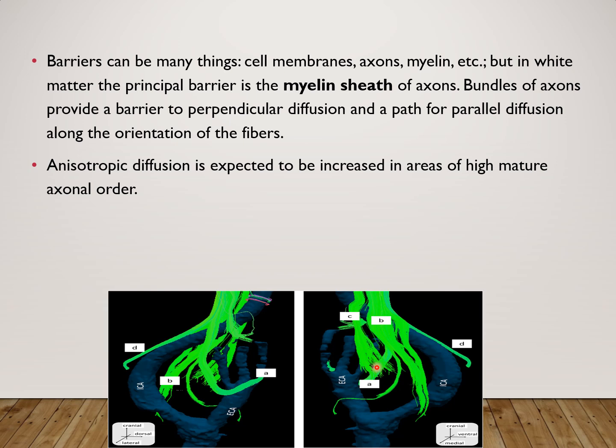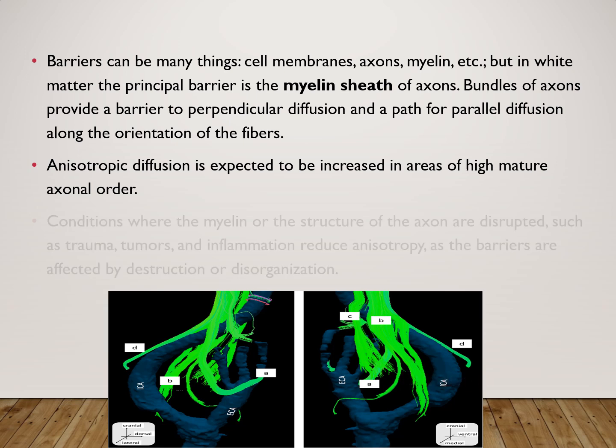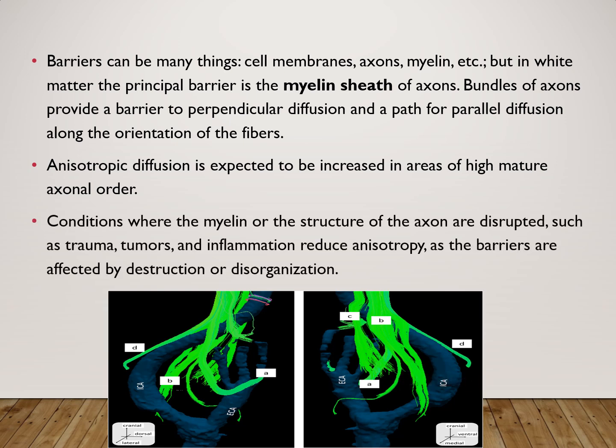Anisotropic diffusion is expected to be increased in areas of high mature axonal order. Conditions where the myelin or the structure of the axons are disrupted, such as trauma, tumors, and inflammation, reduce anisotropy as the barriers are affected by destruction or disorganization.